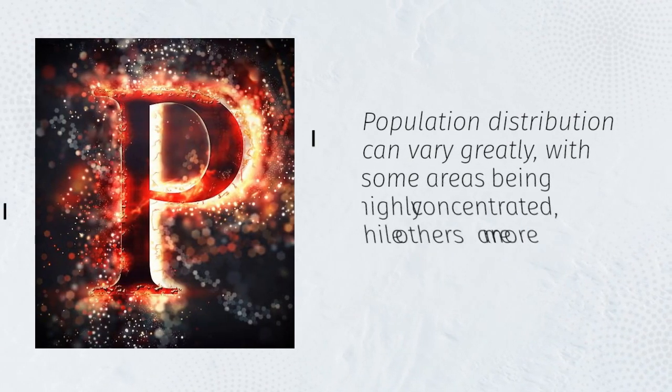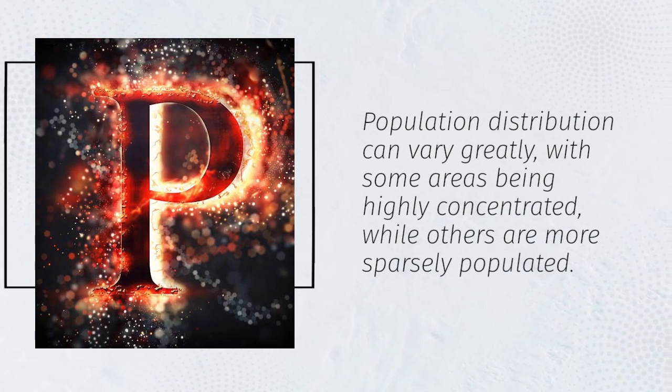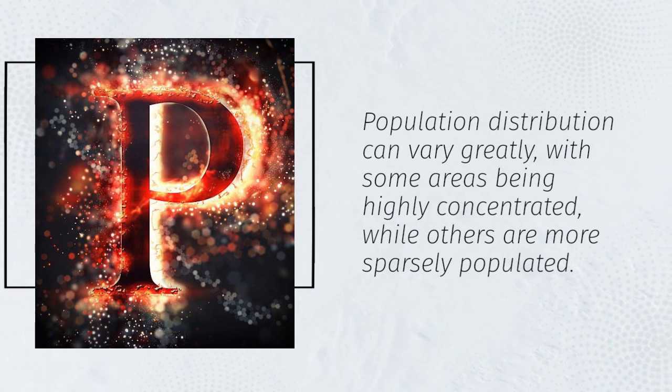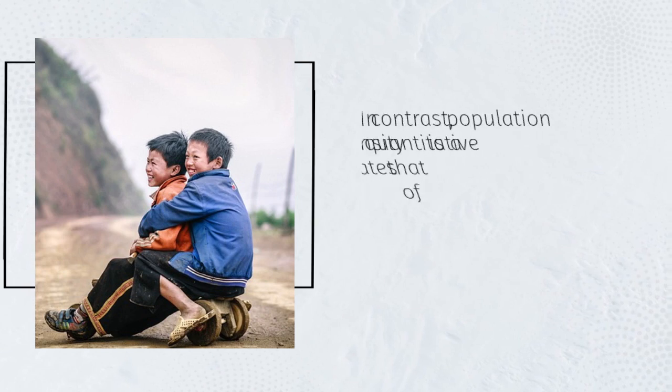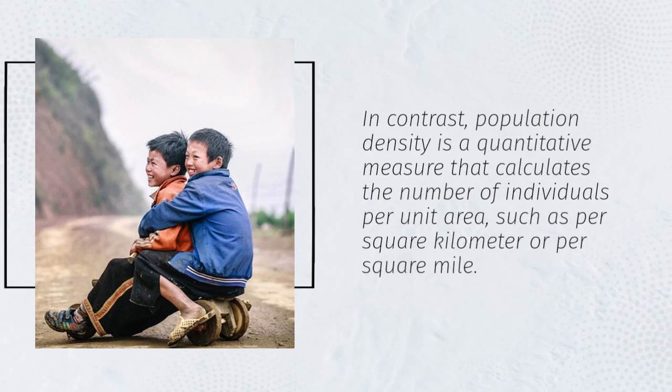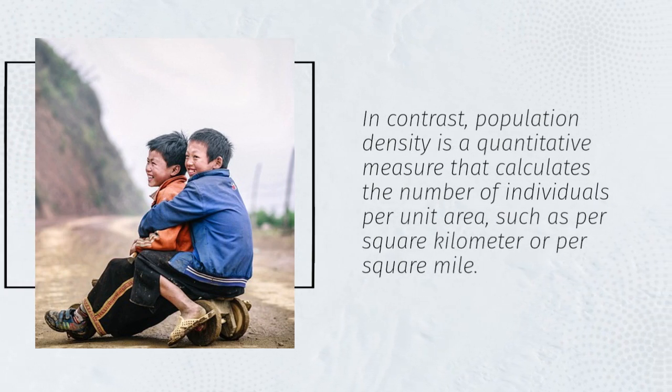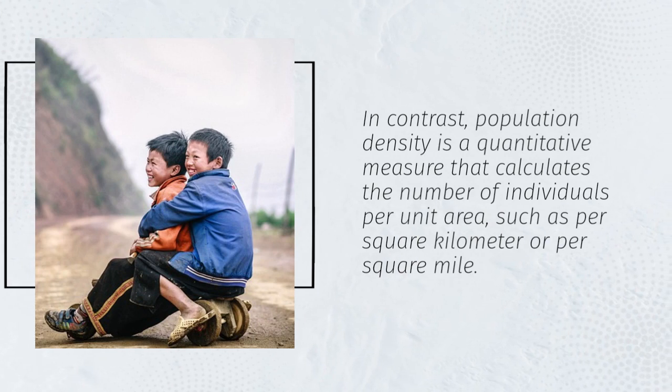Population distribution can vary greatly, with some areas being highly concentrated, while others are more sparsely populated. In contrast, population density is a quantitative measure that calculates the number of individuals per unit area, such as per square kilometer or per square mile.